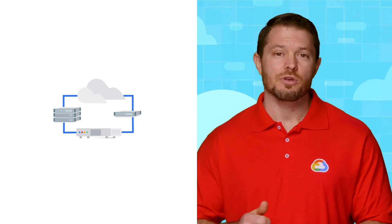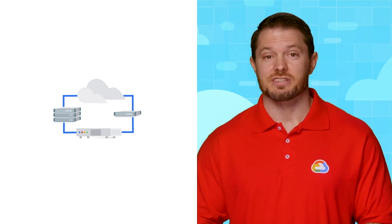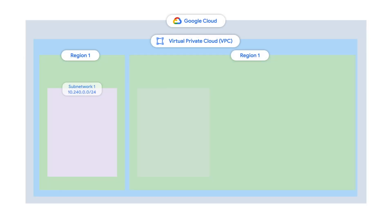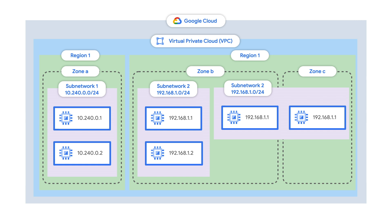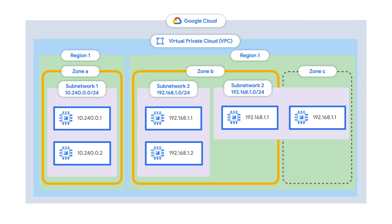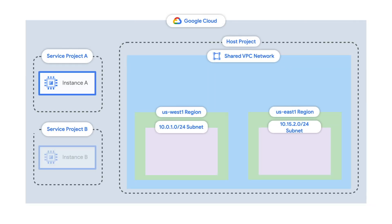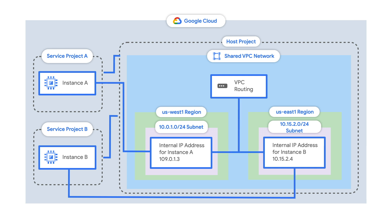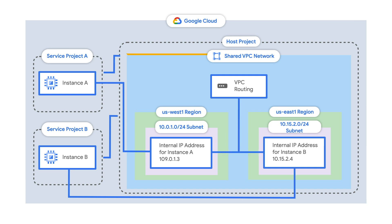Your existing network architecture and application flow will determine how you establish your cloud network setup and how your applications communicate with your existing services. In Google Cloud, the physical network layer is virtualized using software-defined networking. You will deploy and configure a network in a virtual private cloud, or VPC. You can run VPCs across multiple regions and multiple zones within regions to support a wide variety of architectures, including backup and disaster recovery needs. You can also use a shared VPC to connect resources from multiple cloud projects into a central VPC network.